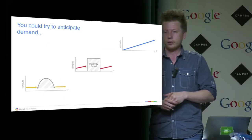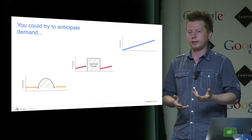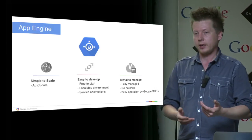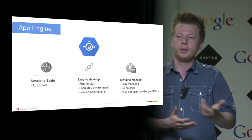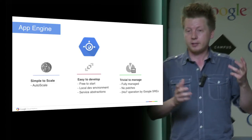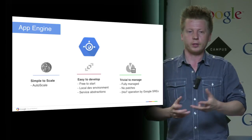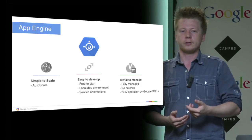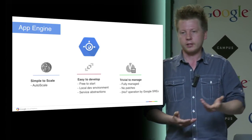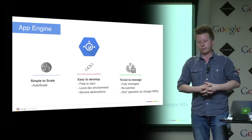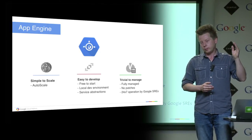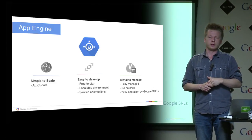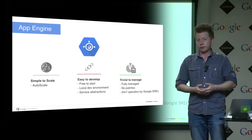You can also forget about predicting traffic spikes or anticipating user growth, because App Engine has an autoscale feature. Imagine you're mentioned at a TechCrunch event and suddenly your app gets a lot of traffic — everyone wants to see your product. With App Engine, you do absolutely nothing, because it will automatically launch as many extra instances of your application as needed to handle that traffic spike and absorb all that traffic. Then later, when traffic goes down, App Engine will automatically shut down those unused instances so you don't pay for extra resources you don't actually use.